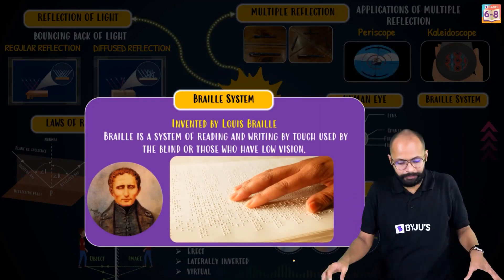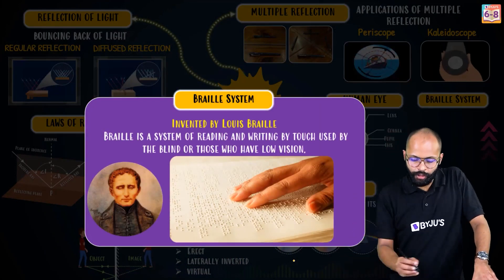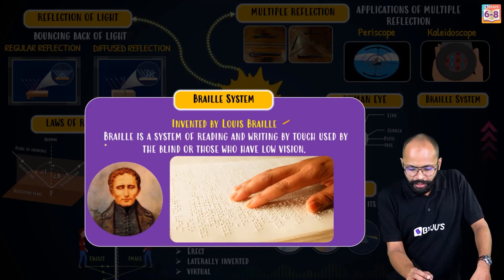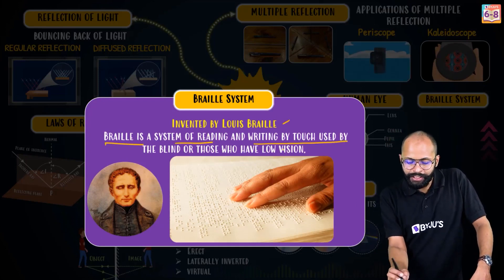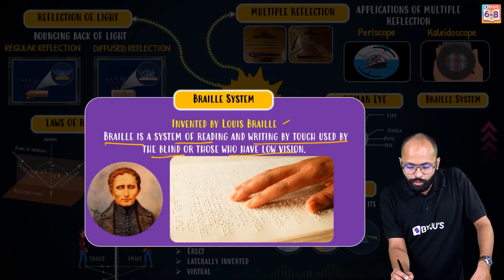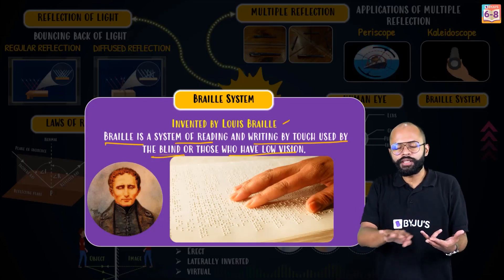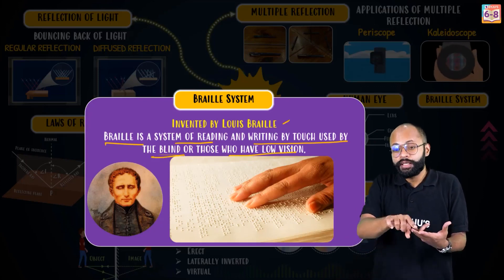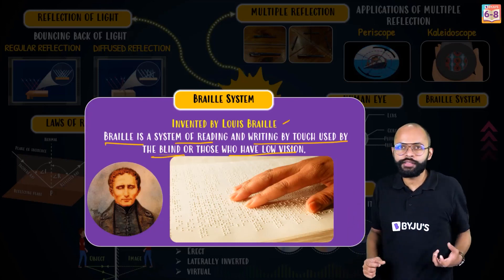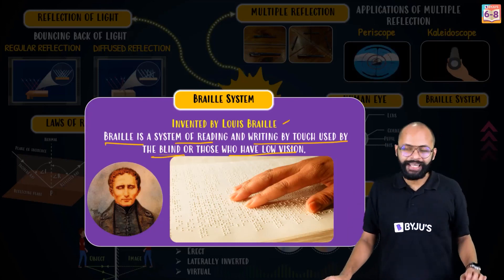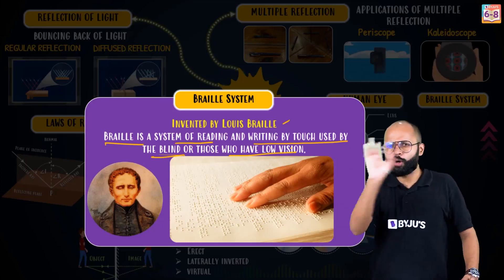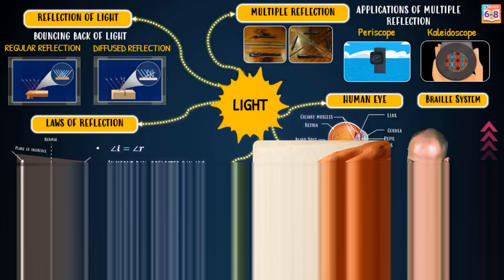This small but important topic in your syllabus is the Braille system. The Braille system is a system of reading and writing by touch used by the blind or those who have low vision. People who cannot see can still read things using this pattern-based system. It was invented by Louis Braille.